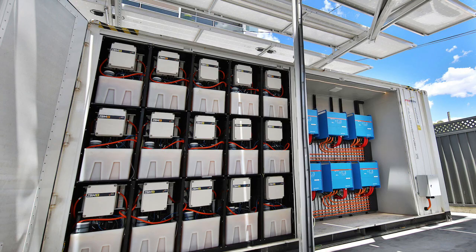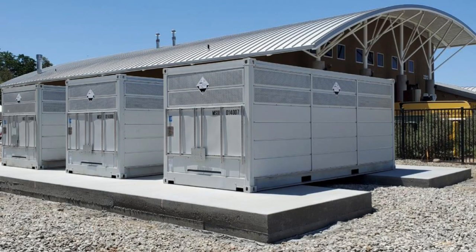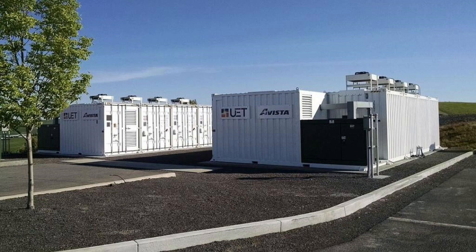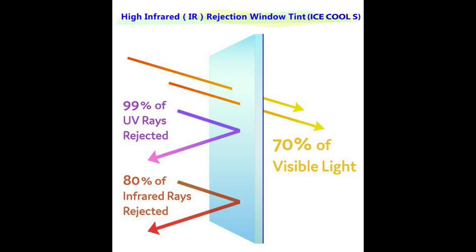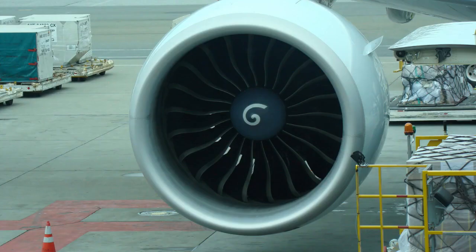Vanadium has a growing use in vanadium redox batteries, which are part of the grid storage battery road we're trying to pursue. It is also a key additive to infrared-blocking glass, as well as a usual additive in different titanium alloys.